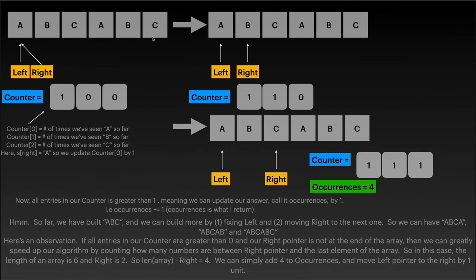So here we have 'abcabc'. We will have both left and right pointer — they both point to the first element when we are starting. Our counter is just an array with three entries: counter[0] corresponds to the number of times we have seen the letter 'a' so far, counter[1] will be the number of times we have seen 'b' so far — and by 'so far' I mean from left to right, inclusive. Counter[2] will be the number of times we have seen letter 'c' so far.